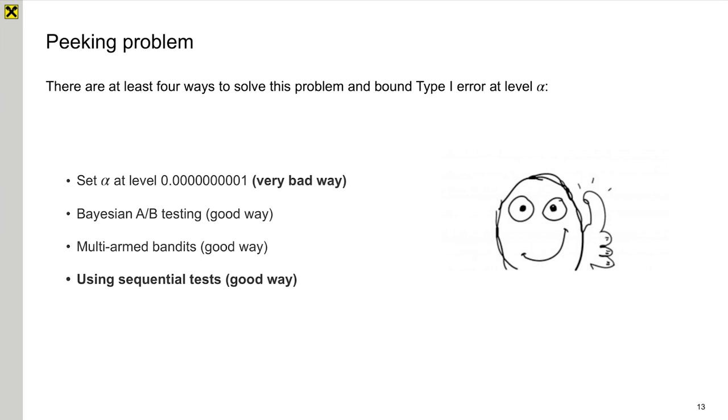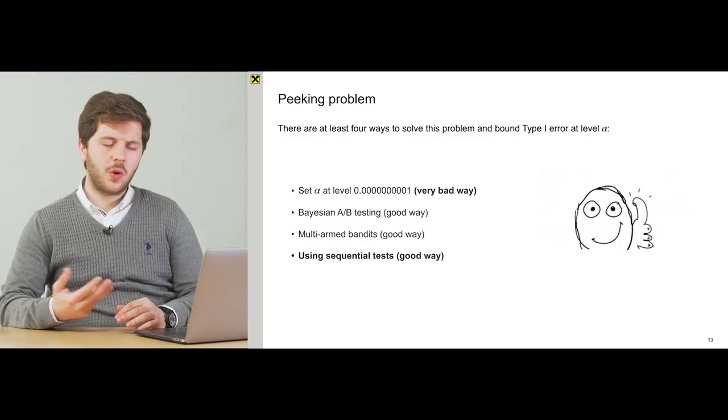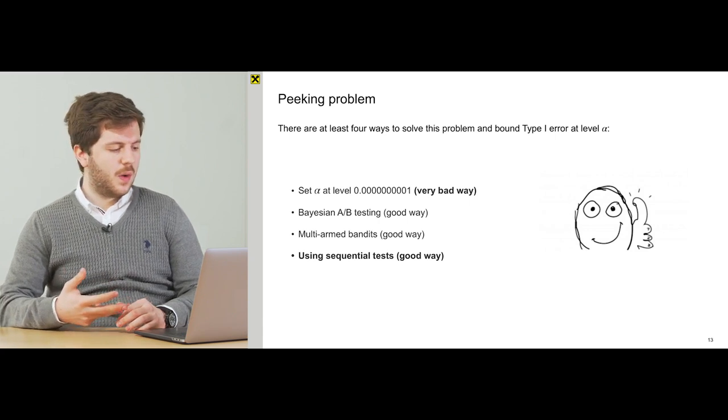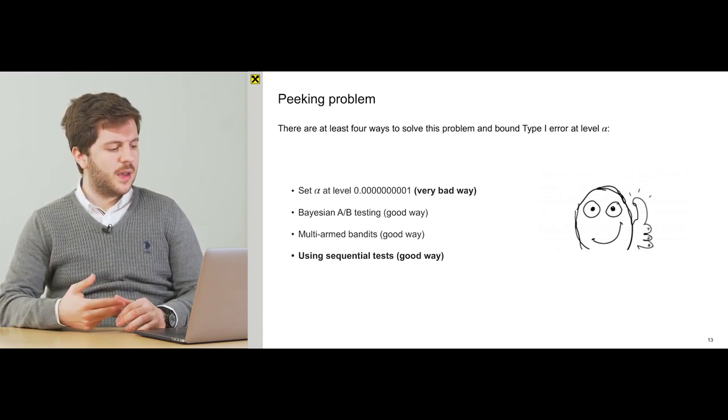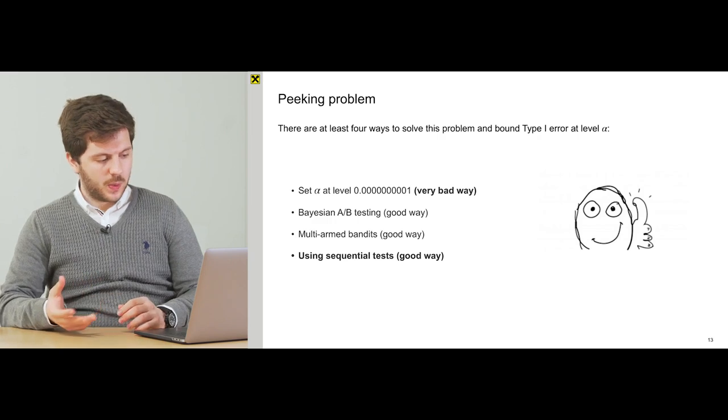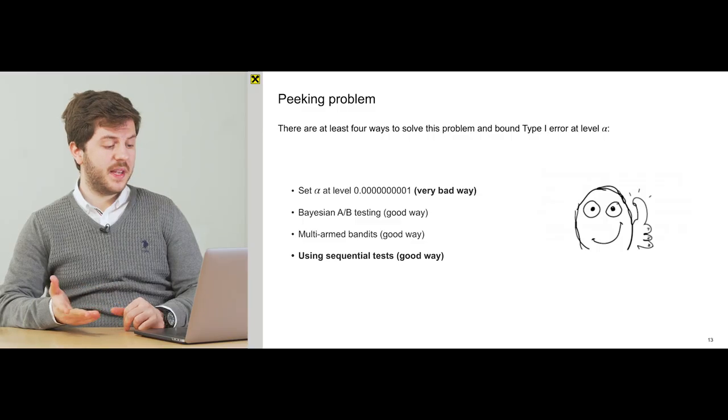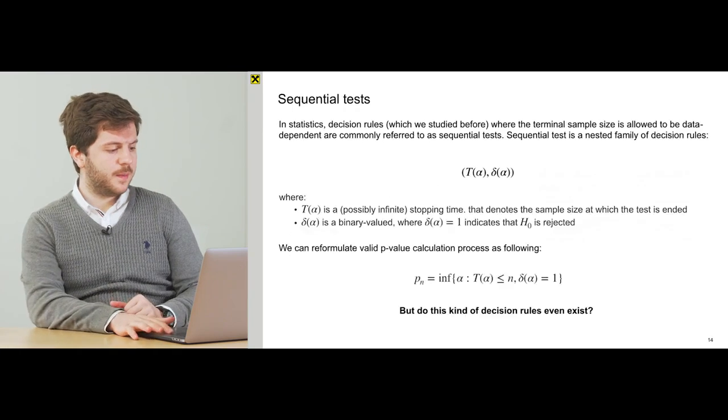The second and the third way to handle this are very similar. It's using Bayesian A-B testing and multi-armed bandits, but we're not going to discuss them today because there are a lot of materials which will show us how to deal with them. Today I want to tell you about sequential testing. It's a very popular way in some companies how to continuously monitor A-B testing without inflating type 1 error rate.